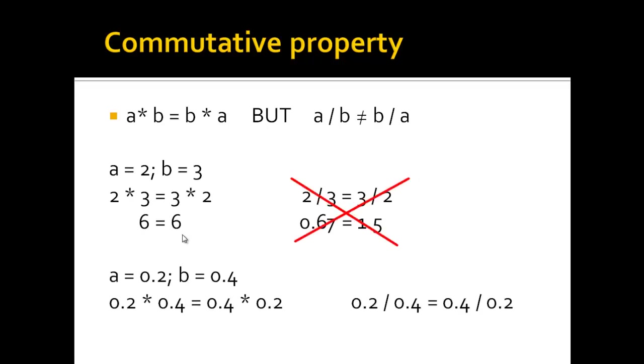The same is true for decimal numbers, so we can multiply 0.2 with 0.4 or 0.4 with 0.2. You will get the same result. However, when you divide one of these two numbers by the other one, you will not have the same result if you switch the position of the numbers, and that is the commutative property.